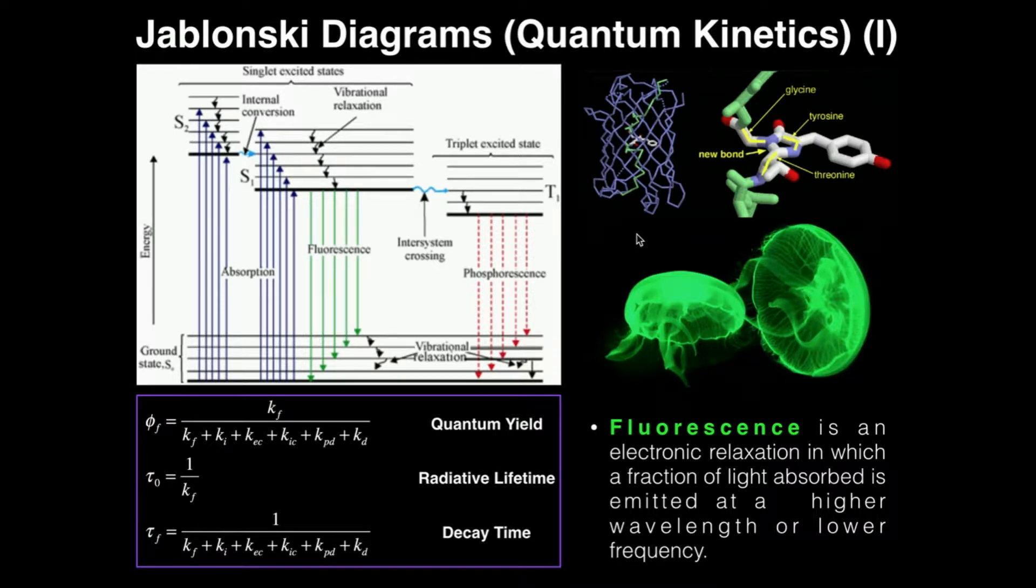When we talk about quantum kinetics, normally we're interested in fluorescence. So first of all, what is fluorescence? Fluorescence is an electronic relaxation in which a fraction of light absorbed is emitted at a higher wavelength or lower frequency.